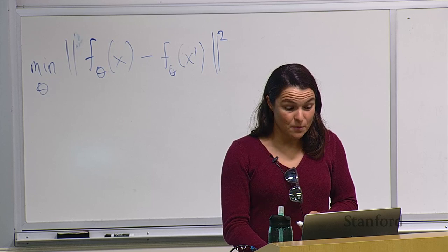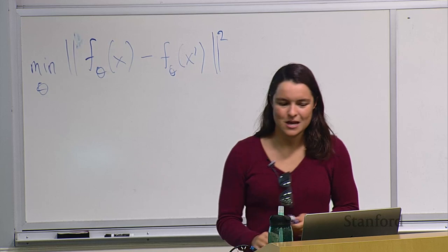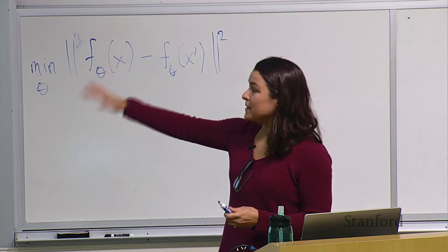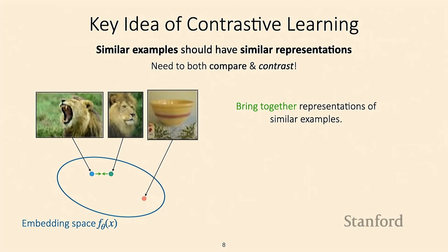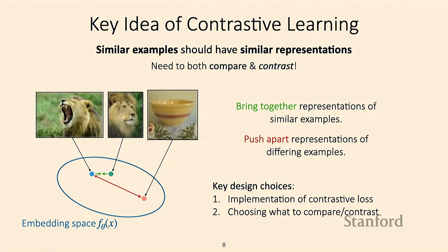That's one of the key ideas behind contrastive learning. If we take three examples and embed them, we train the embedding space to bring together the representations of similar examples while also pushing apart the representations of different examples. From here, there are really just two key design choices: first, how do you implement the loss function — we'll go over two different loss functions in this lecture; and second, choosing what to compare and contrast.